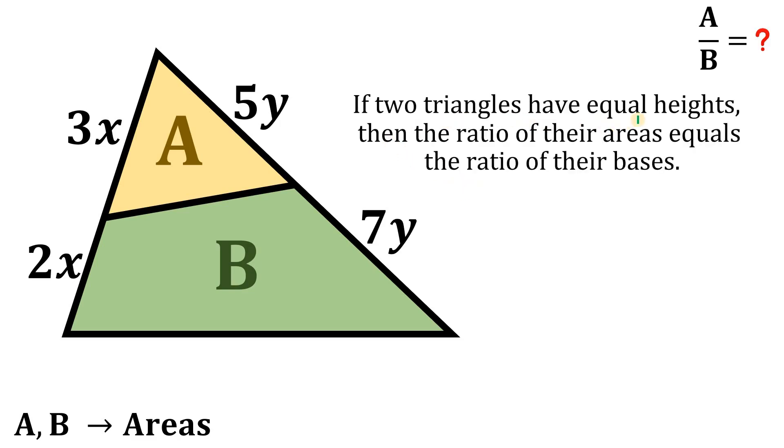So given if two triangles have equal heights, then the ratio of their areas equals the ratio of their bases. This is not hard to prove.